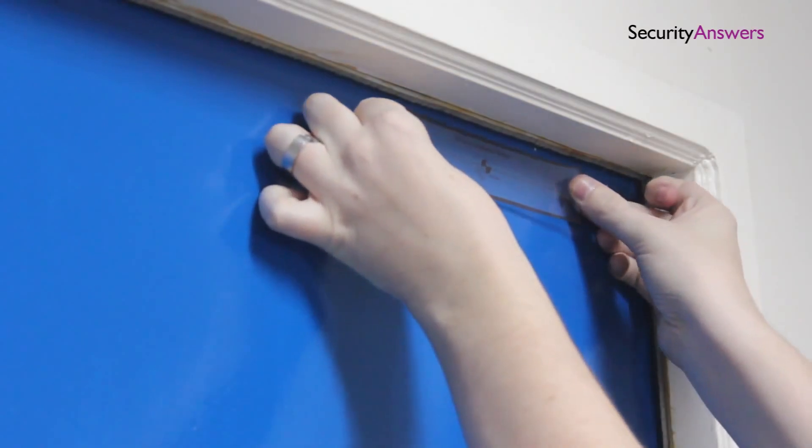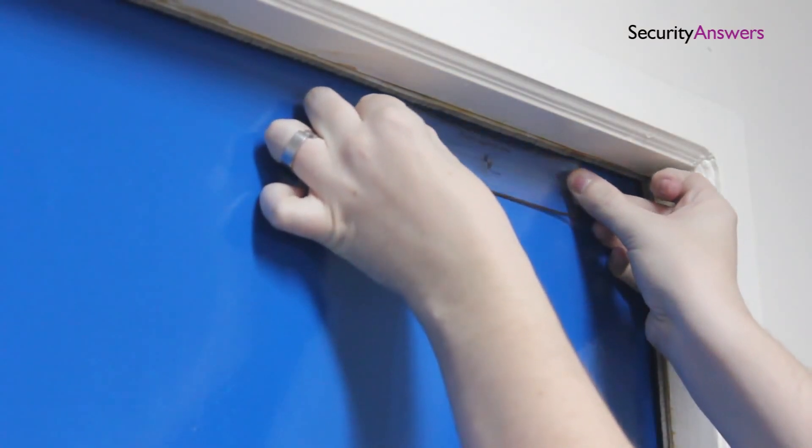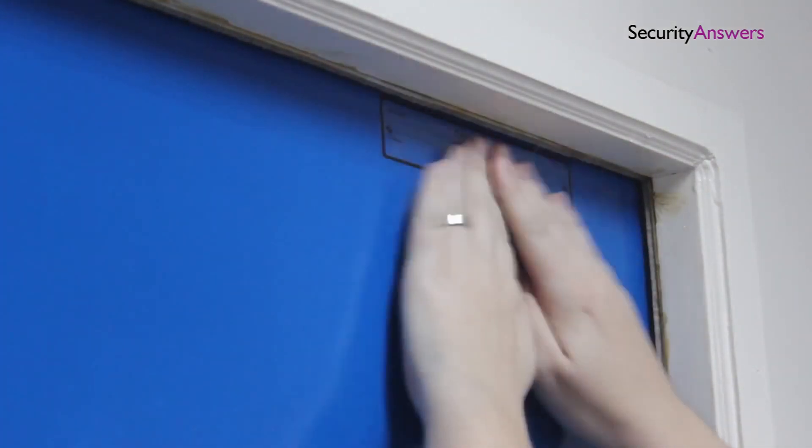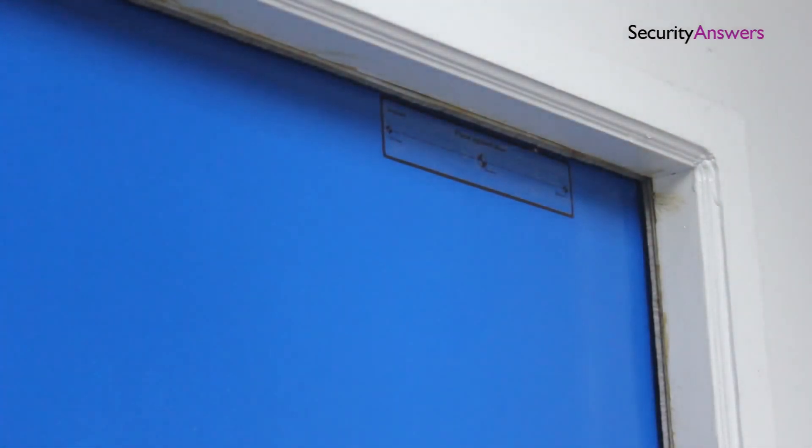This is done while the door is closed as we need to account for the lip of the doorframe as shown here. If we mount the magnet while the door is open, there is a danger that you may mount the magnet to the very top of the door.